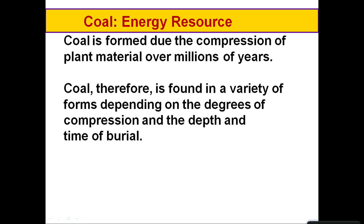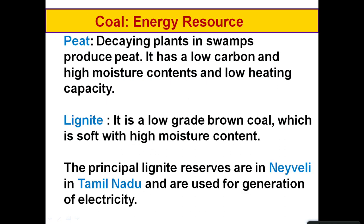How is coal formed? Coal is formed due to the compression of plants over millions of years. There are different grades or varieties of coal depending on the depth at which it is formed, the time taken for its formation, and the temperature to which it has been exposed during burial.